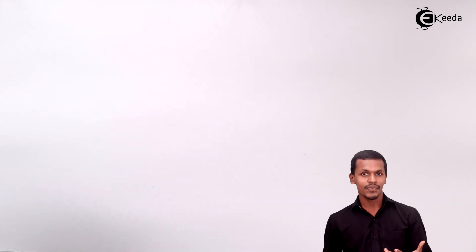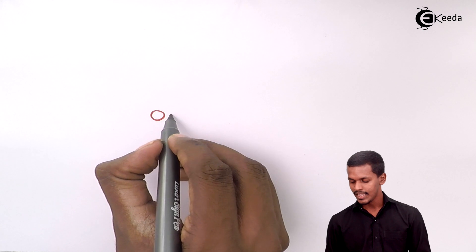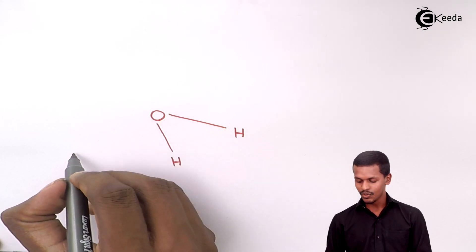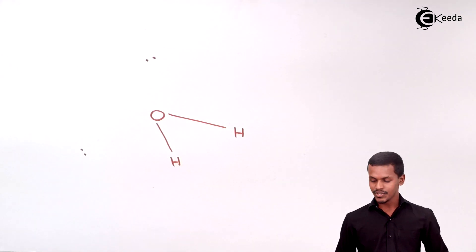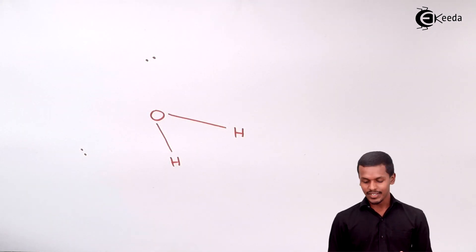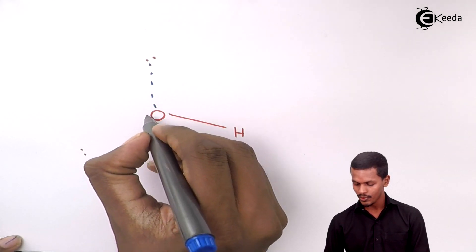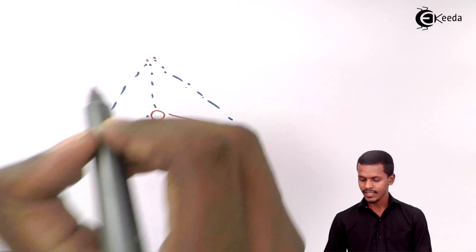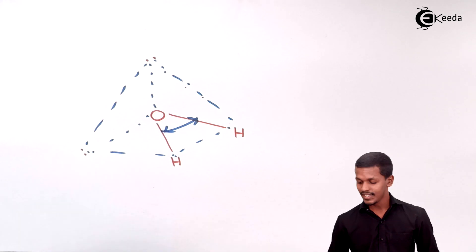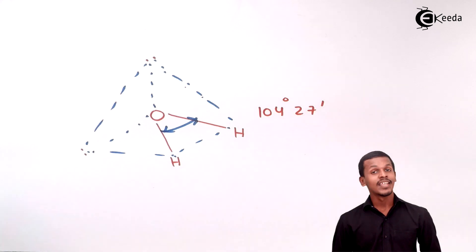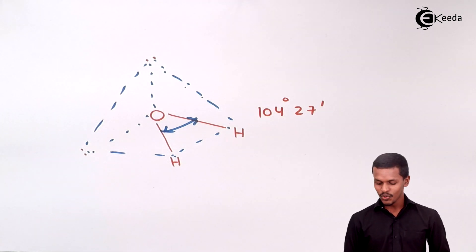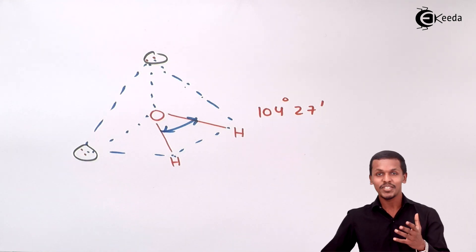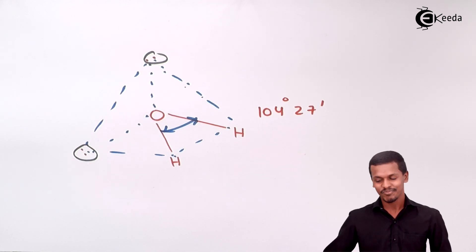The structure of the water molecule shows oxygen in the center with two hydrogen atoms. The geometry is similar to tetrahedral but distorted due to lone pair repulsion. The bond angle in water is 104°27', which is less than the standard 109°28' of a perfect tetrahedron. This shows that lone pair electrons play a vital role in repelling and reducing the bond angle. Not every sp3 molecule has a 109°28' bond angle — it can be less.